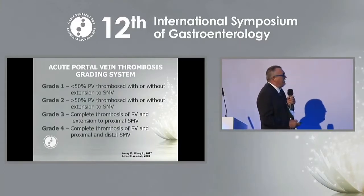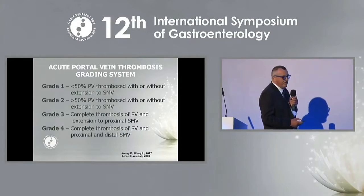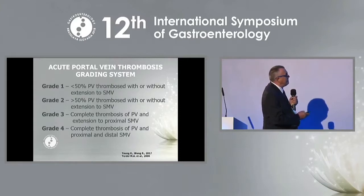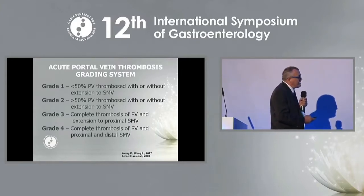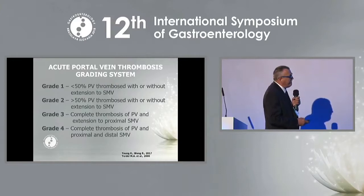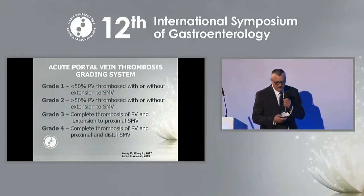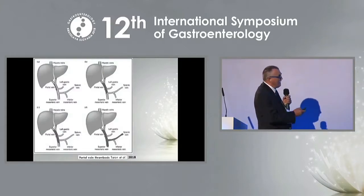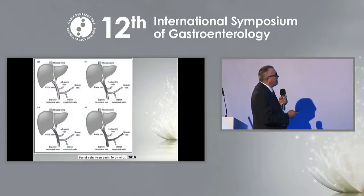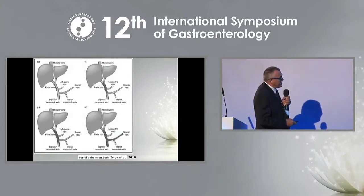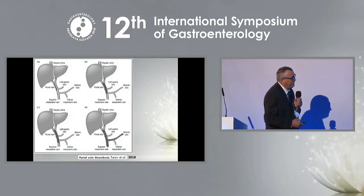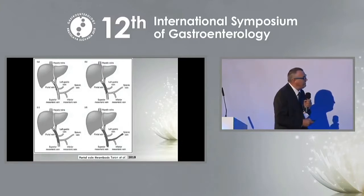Acute portal vein thrombosis is graded: Grade 1 is thrombosis of less than 50% of the portal vein; Grade 2 is more than 50%; Grade 3 is extension of thrombosis to the superior mesenteric vein; and Grade 4 is complete thrombosis of the portal and superior mesenteric vein. Here is a picture showing Grade 1, 2, 3 with extension to the superior mesenteric vein, and Grade 4 where the entire portal system is thrombosed.